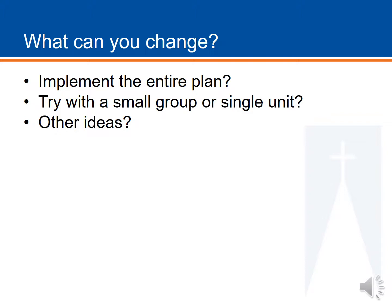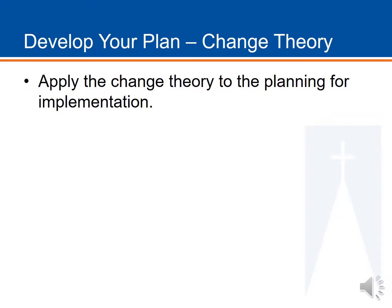Next, you'll write up how your change theory is going to guide your process implementation. Once you've decided on your innovation — say, aromatherapy with inpatient hospice clients — you need to think about what's required for success. This will likely include education, training, obtaining resources or funds to support the project, and getting buy-in from key stakeholders. Those are the kinds of things you'll consider while applying the change theory.